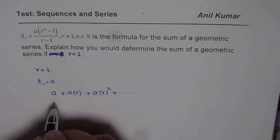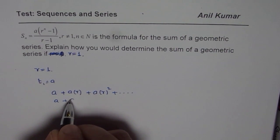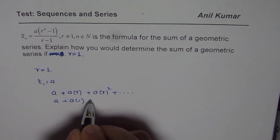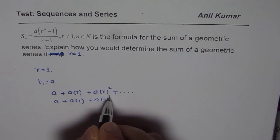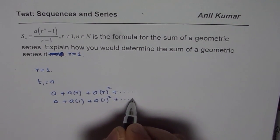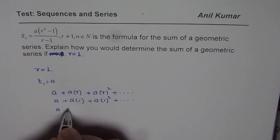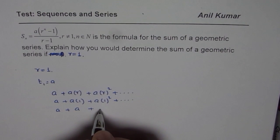But if r is 1, then the series will be a plus a times 1 plus a times 1 square plus so on, correct? Basically the series will be the sum of a's. Do you see that?